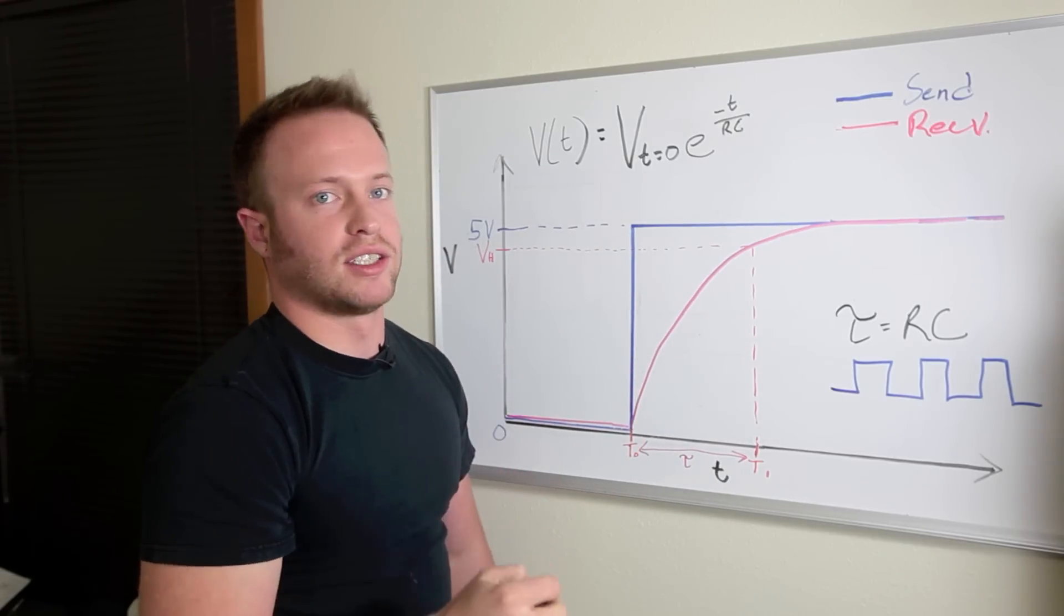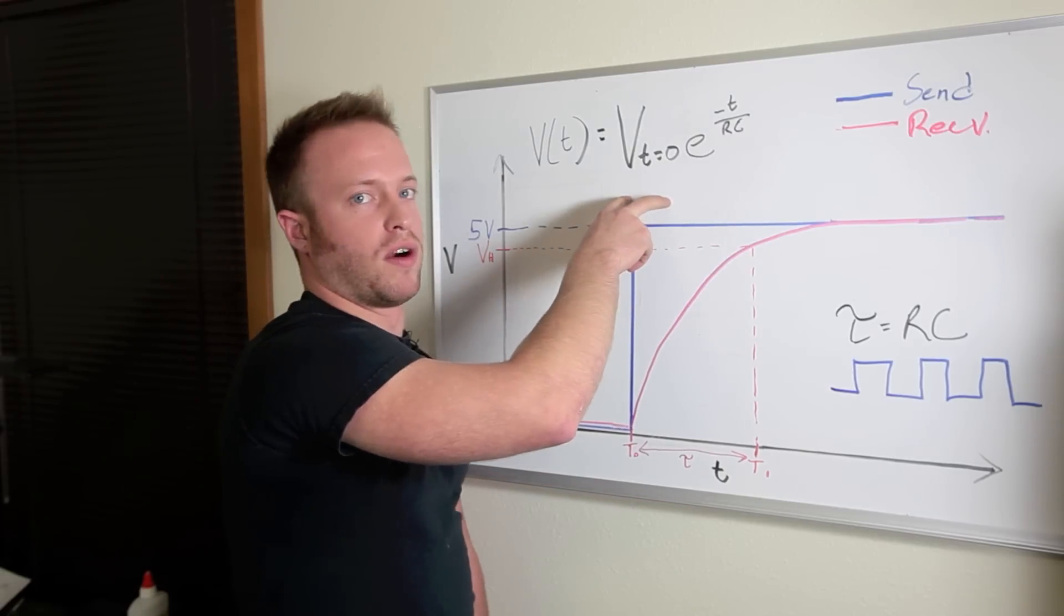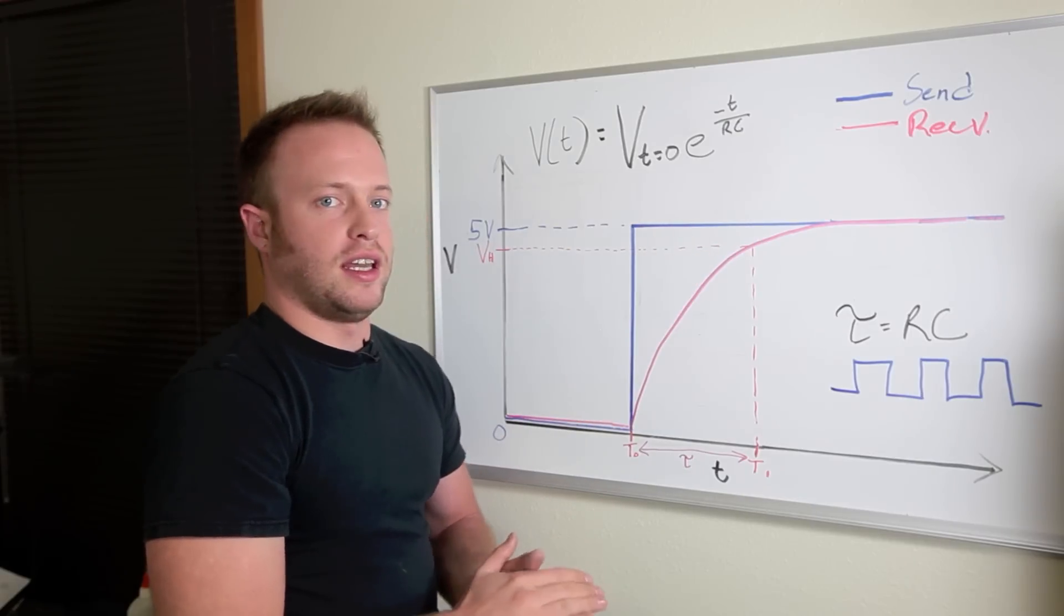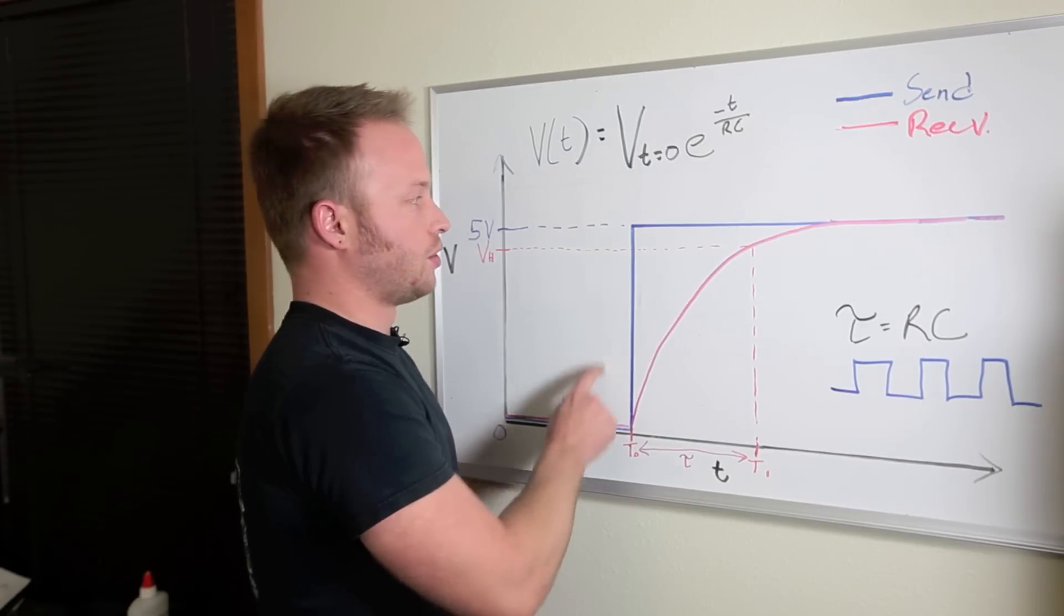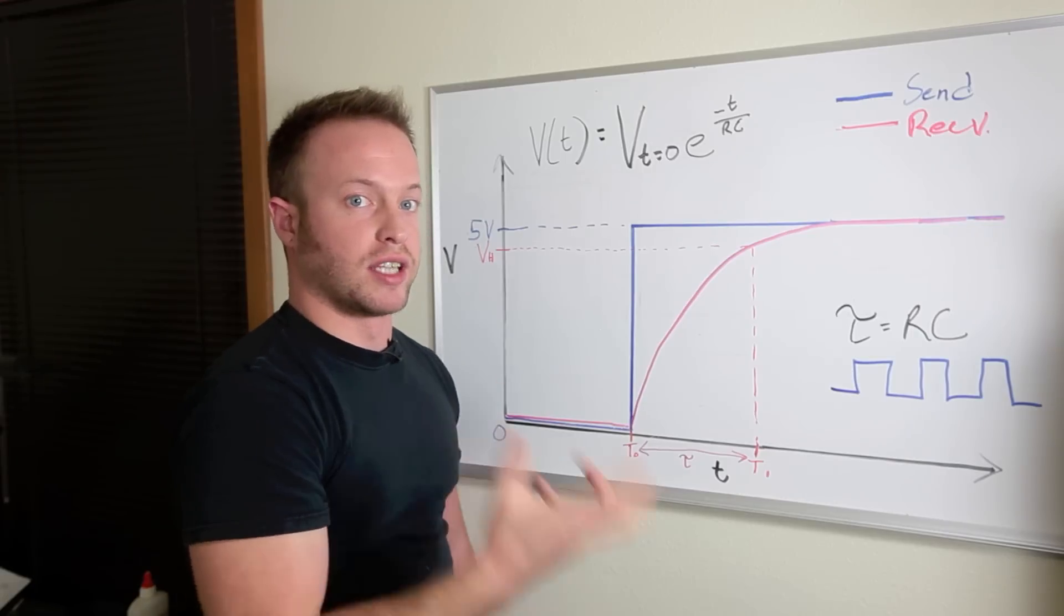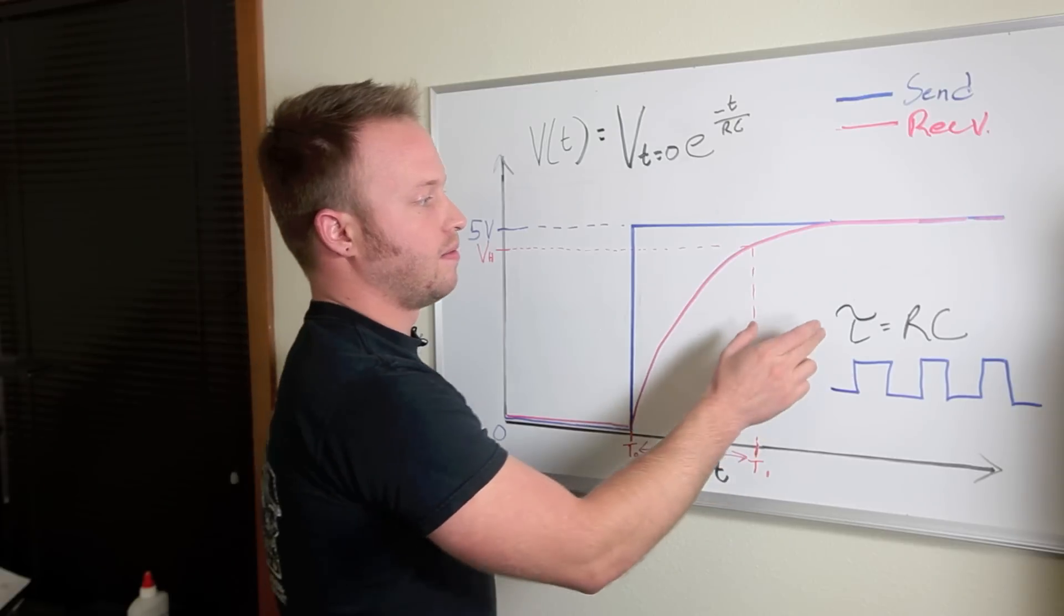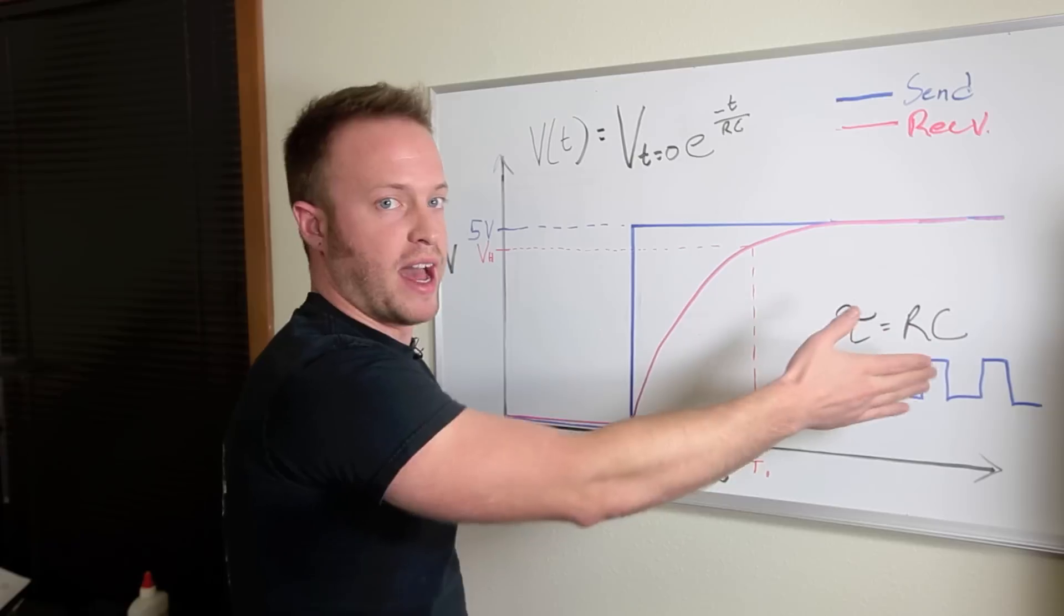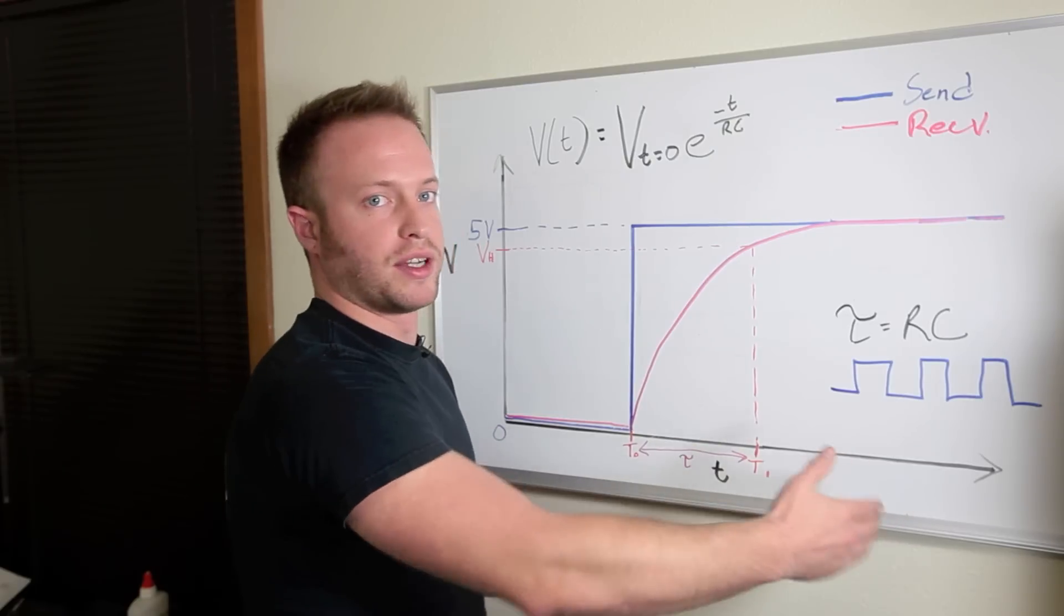The resistor and capacitor create what's known as RC delay. This is the equation for exponential decay that it's based off of. The thing is, the voltage across the resistor and capacitor, the voltage that is received on the receive pin, does not go straight to five volts like the send pin. The resistor and capacitor create a delay. The capacitor has to charge up to five volts and that takes time. And it creates this value tau. Tau is resistance times capacitance. So the higher the resistance or the higher the capacitance, the longer it's going to take to charge up.